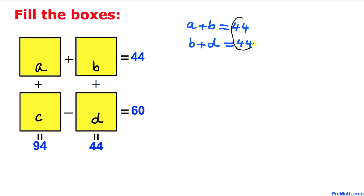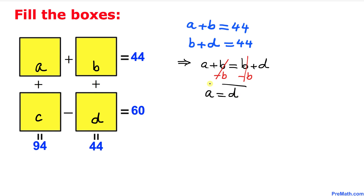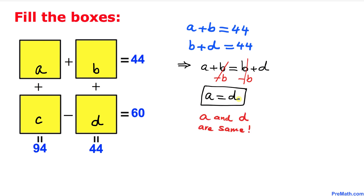Let's compare these two equations. Since the right-hand sides are the same, the left-hand sides must be equal as well, so A plus B equals B plus D. Subtracting B from both sides, we get A equals D.